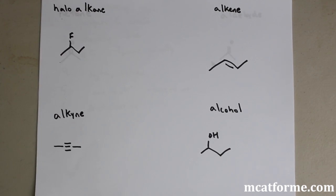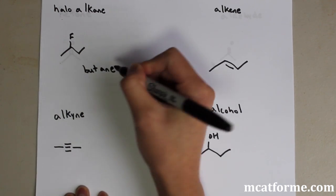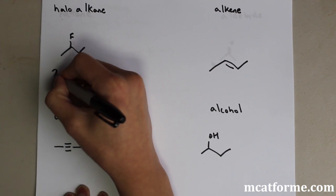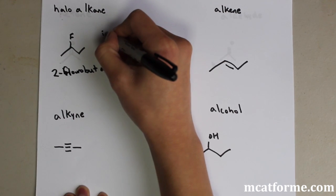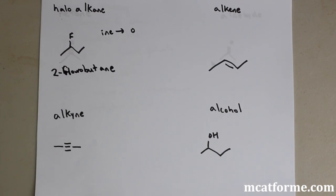Next we're going to talk about haloalkanes. 'Halo' comes from the halogens. For these, we treat the halogens as substituents, similar to a methyl group. First, name the main parent chain — which is butane in our example. Then we change the '-ine' ending to '-o'. So fluorine becomes fluoro. Pretty simple.